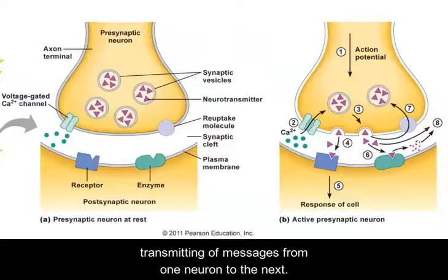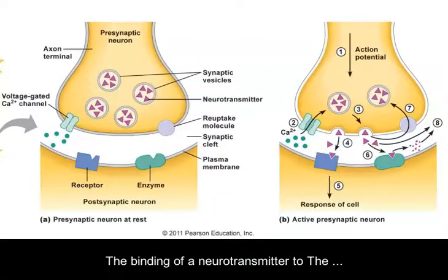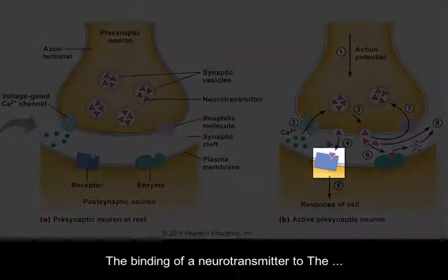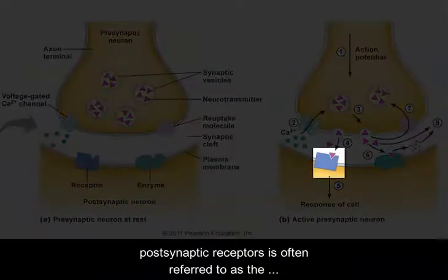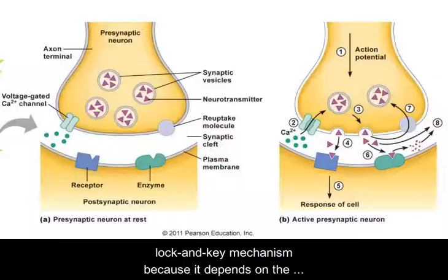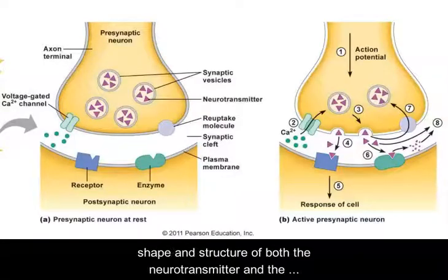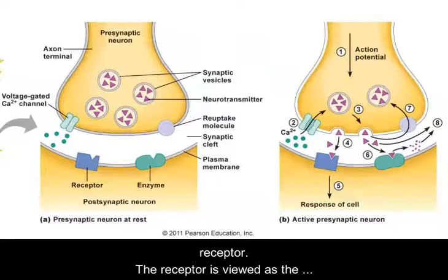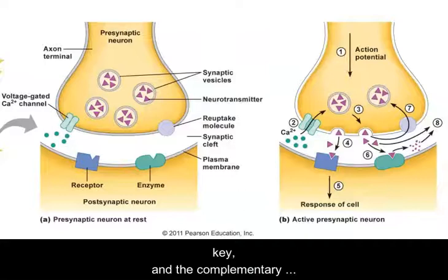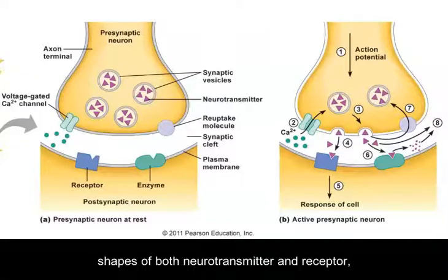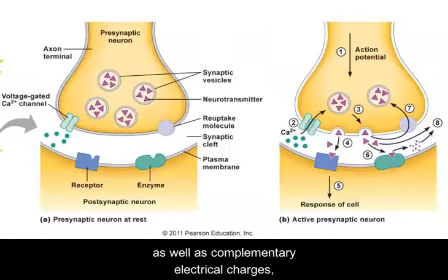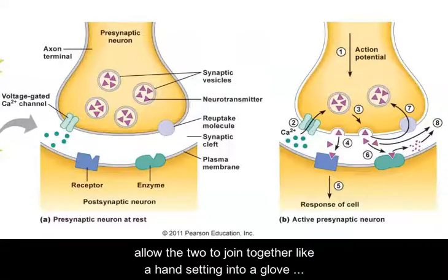The binding of neurotransmitter to the postsynaptic receptors is often referred to as the lock and key mechanism, because it depends on the shape and structure of both the neurotransmitter and the receptor. The receptor is viewed as the lock, the neurotransmitter as the key, and the complementary shapes of both the neurotransmitter and receptor, as well as complementary electrical charges, allow the two to join together like a hand fitting into a glove or a key fitting into a lock.